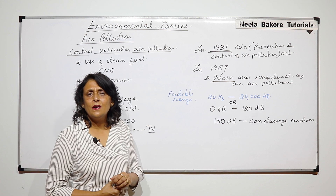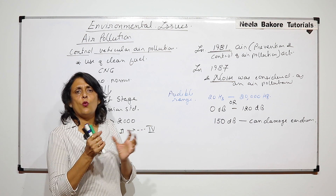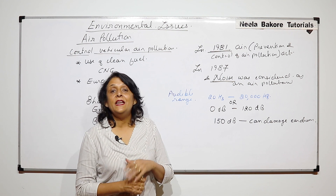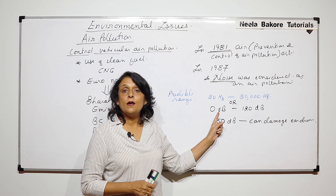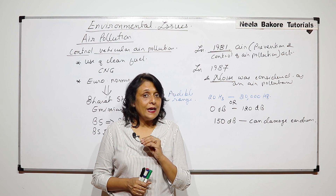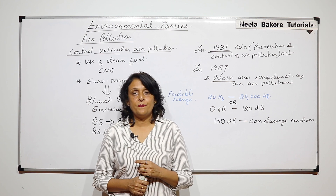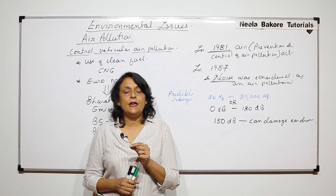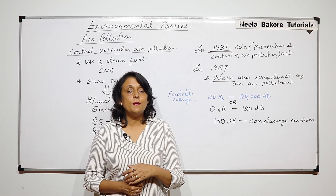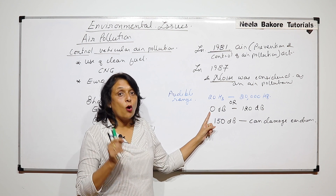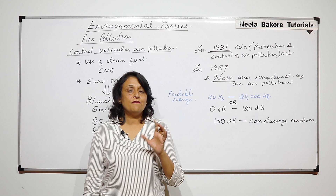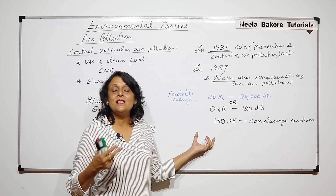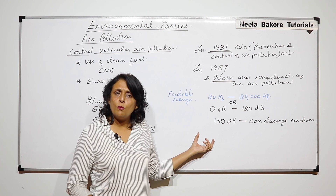What sound corresponds to which level? When we are talking normally, that is around 30 to 40 decibels. If you are whispering, it is somewhere around 15 to 20 decibels. Our audible range starts from 0, and whispering is about 15 to 20 decibels, while normal conversation is around 30 to 35 decibels.